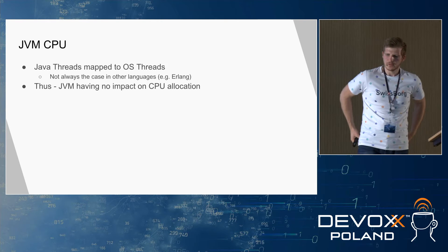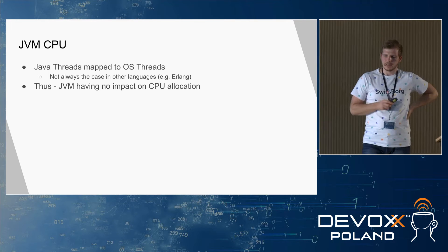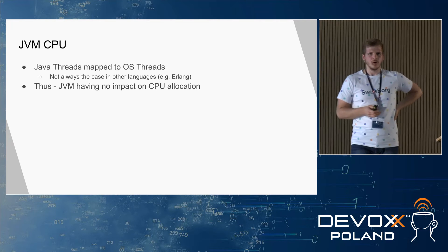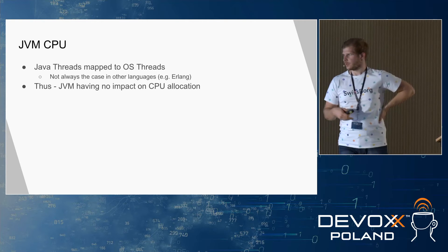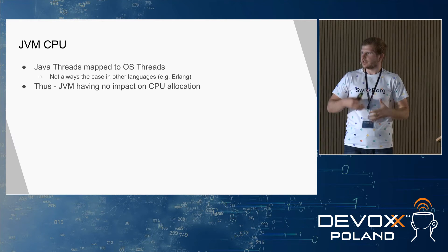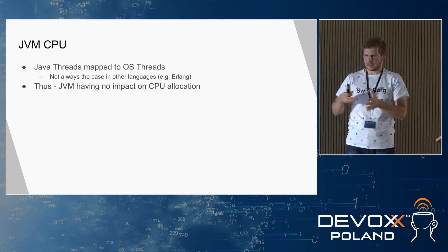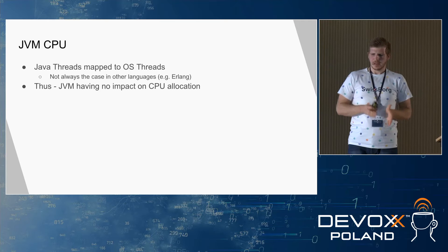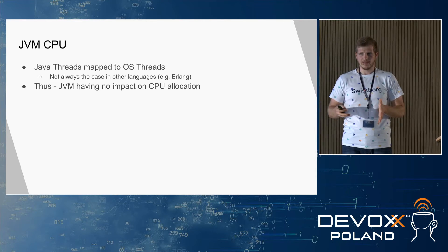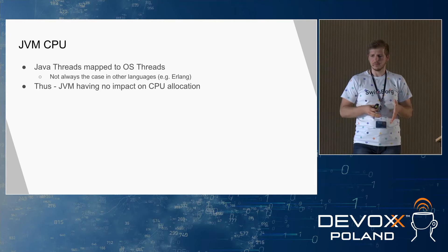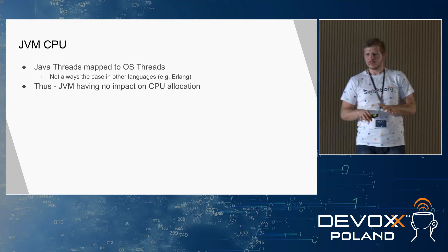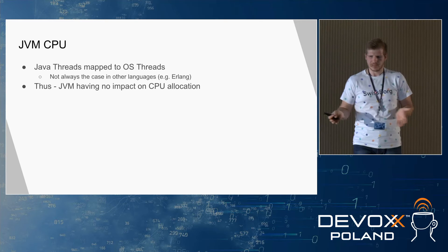Let's go to JVM and CPU. Java threads are mapped to operating system threads, which is not always the case in other languages. For example, in Erlang there's a notion of internal processes managed in the runtime. It was also the case in Java in very early versions — there was a notion of green threads, and JVM was a single-threaded process. But they dropped this approach early, and now we have threads mapped to operating system threads.